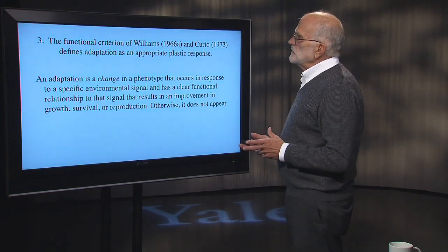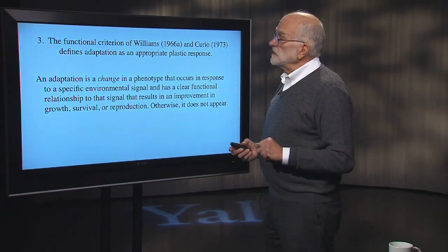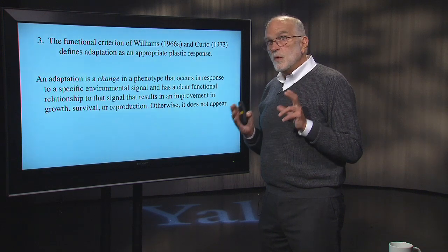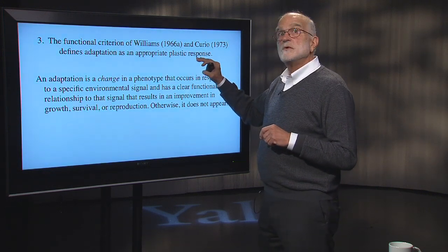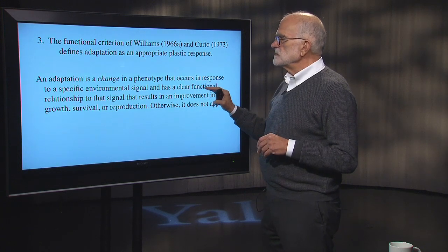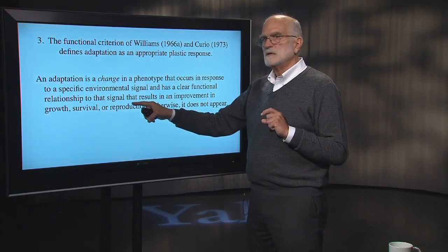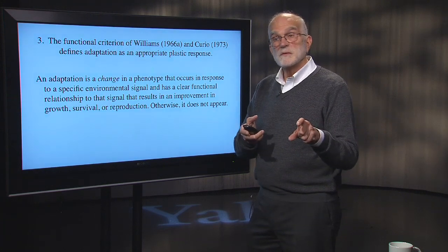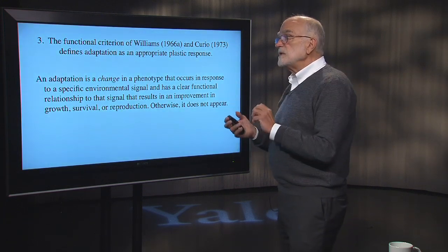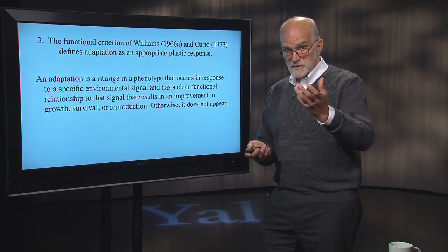The third way we recognize adaptation is the functional criterion, based on a change in phenotype. We owe it to both George Williams and Eberhard Curio, who defined an adaptation as an appropriate plastic response — a change in phenotype that occurs in response to a specific environmental signal, has a clear functional relationship to that signal improving survival or reproduction, and otherwise does not appear. This happens when the change is costly: if it costs you something, you only do it when there is a clear reason to do so.